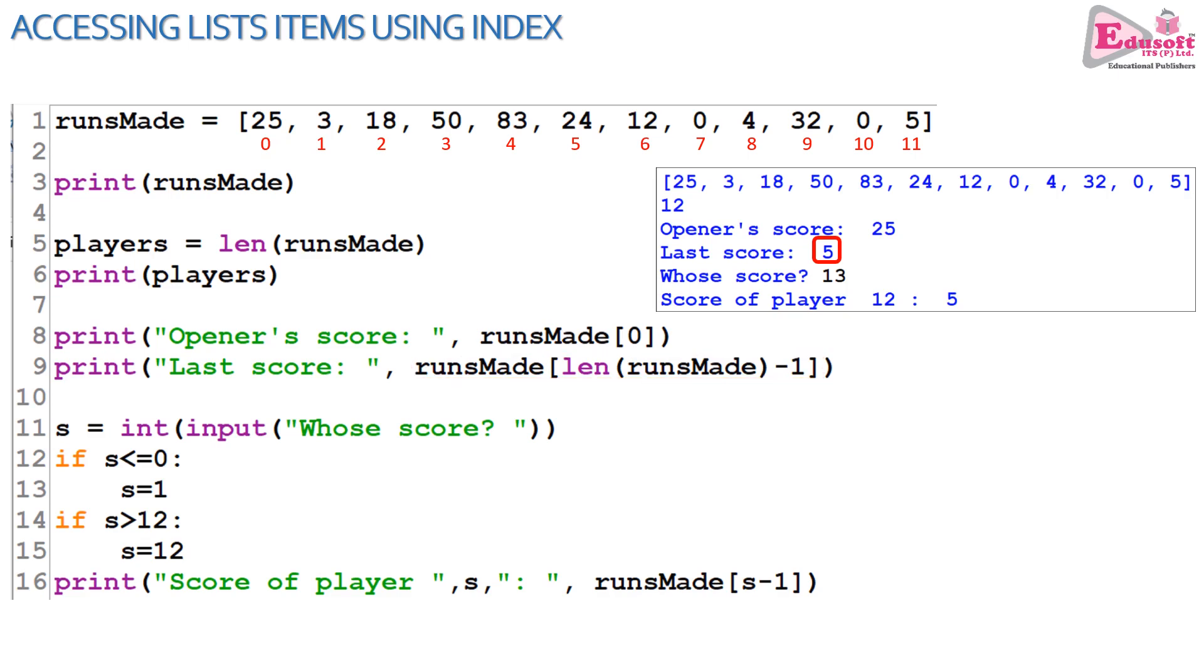In lines eight and nine, we are accessing the very first element by index zero and the very last element. Len function returns the number of items minus one, which gives us 11, the index position of the last item. Then we are accepting from the user the index number, validating if the index is negative or beyond the number of items. So values can be accessed from the list depending on their index position.